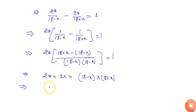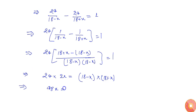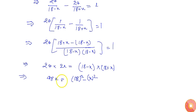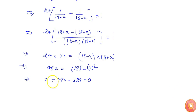So 48x equals (a minus b)(a plus b), which is 18 squared minus x squared, giving 48x equals 324 minus x squared. Rearranging, x squared plus 48x minus 324 equals 0.